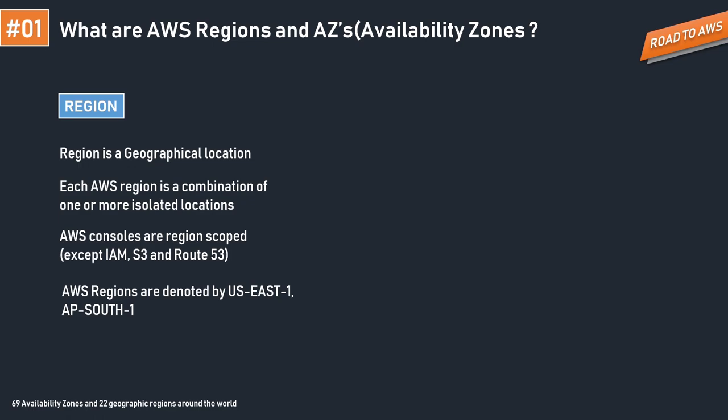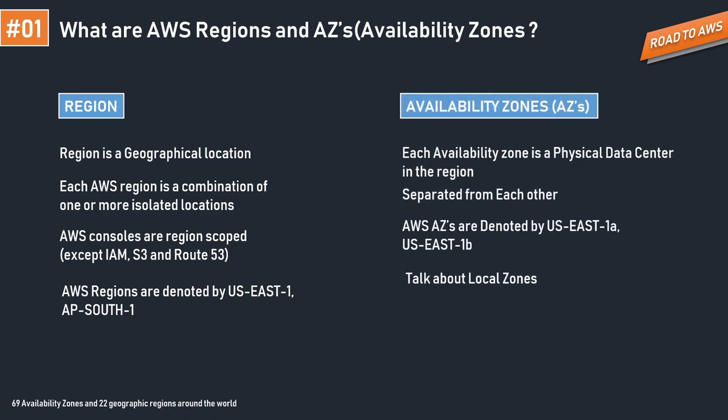Since regions don't replicate automatically, how do we achieve fault tolerance and high availability? Each AWS region is a combination of one or more isolated locations called Availability Zones, or AZs. Each availability zone is a physical data center in the region and can have one or more data centers. To achieve high availability and fault tolerance, we host our instances in multiple availability zones, so that even if one fails due to an unforeseen event like an earthquake, the others remain operational.